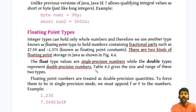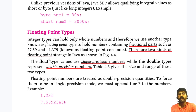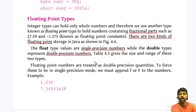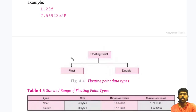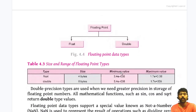The next one is called floating point data types, which represent real numbers. If you want to store some fractional part, you use floating point data types. There are two kinds: the first is called single precision, indicated by float, and the second is called double precision, indicated by double. Float takes four bytes of storage space, whereas double takes eight bytes. The minimum and maximum values are given in the table.